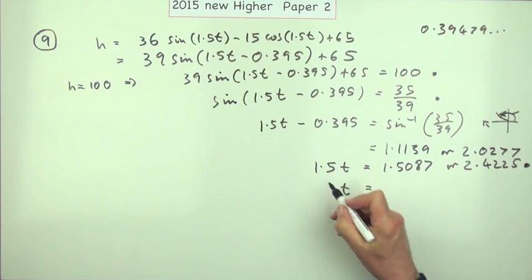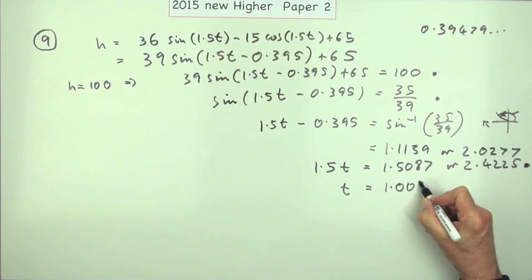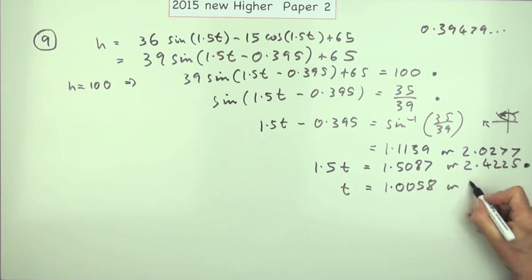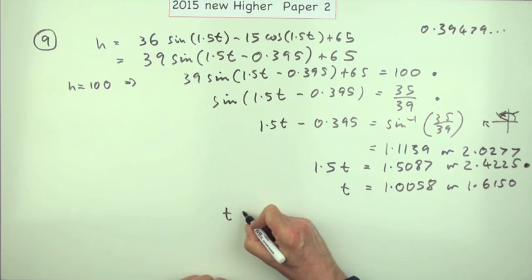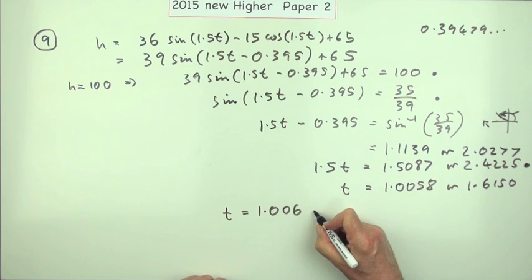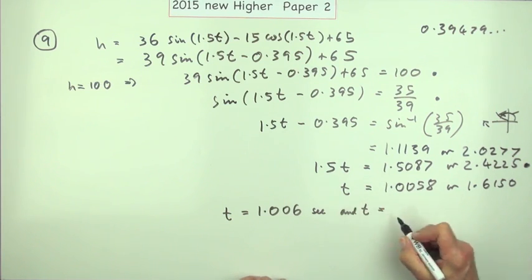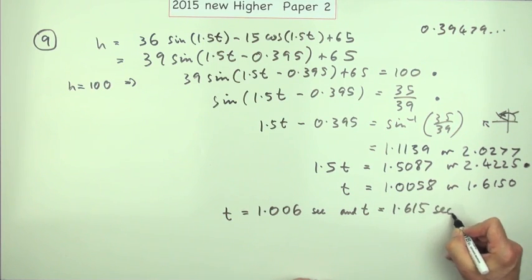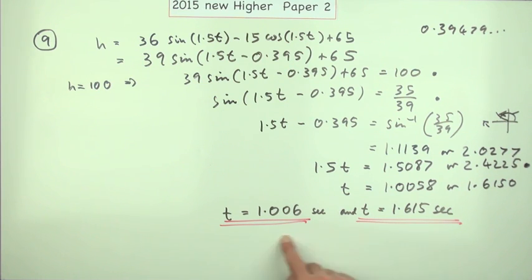The final mark comes for dividing by 1.5: that gives T = 1.0058 or T = 1.6150. Rounding to three decimal places, the final answers are T = 1.006 seconds and T = 1.615 seconds. The marking scheme allows for various degrees of rounding, right down to just 1.0 and 1.6, which seems reasonable for seconds.